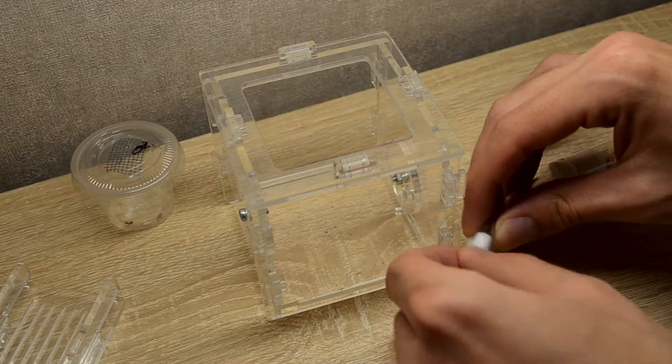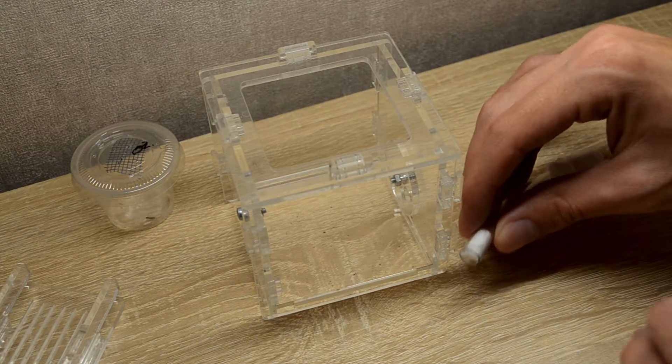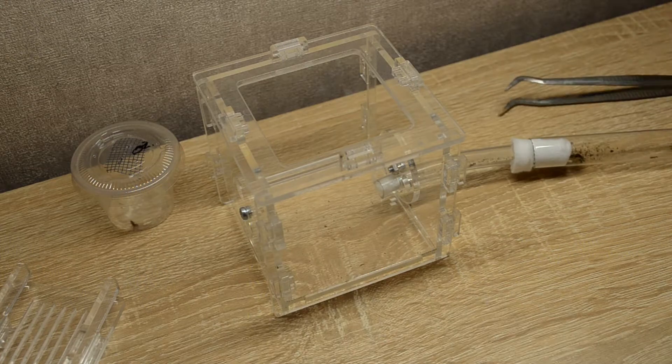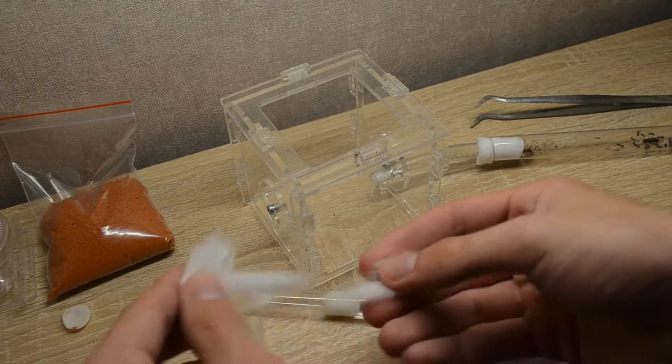Now you need to push the cotton wool a little further down the tube so that it does not get in the way, and stick the tube back into the arena. Since the water has run out, you need to connect the drinking bowl.